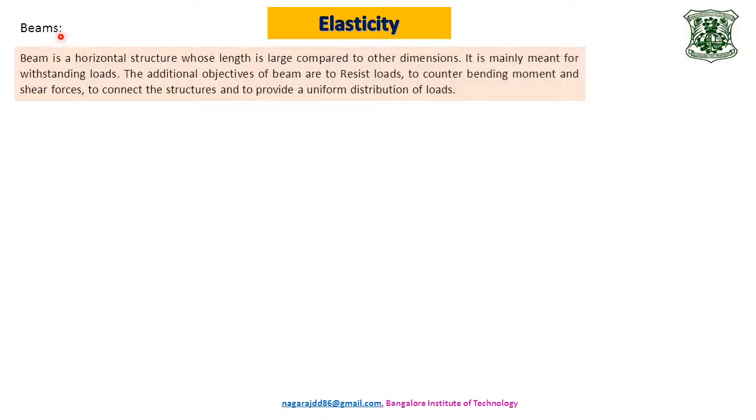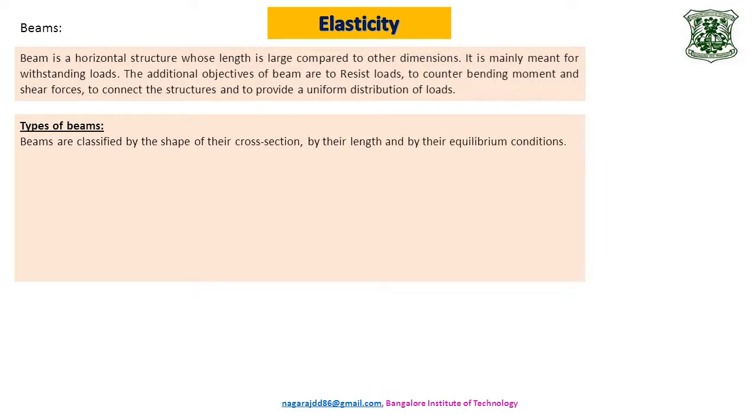Now a small discussion on beams and engineering structure. Beam is a horizontal structure whose length is large compared to other dimensions. It's mainly meant for withstanding loads. The additional objectives of beam are to resist the load, to counter bending moment and shear forces, and also to connect the structures and to provide uniform distribution of loads. Now types of beams. Beams are classified by the shape of their cross section, by their length and by their equilibrium conditions. Here based on the equilibrium conditions we have the classifications.